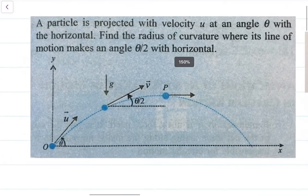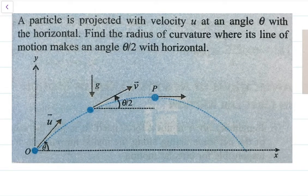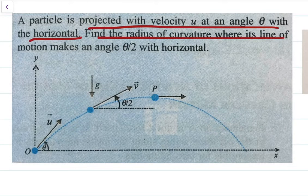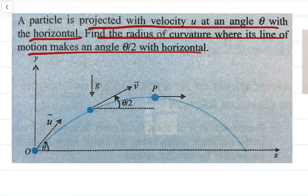Now let's do this question — it is also a basic question, so first let's read it. A particle is projected with velocity U at an angle theta with the horizontal. Find the radius of curvature where the line of motion makes an angle theta by two with the vertical. I hope you will attempt this question yourself first and then cross-check your answer with mine.